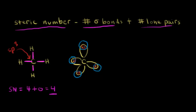Now that we have this picture of the methane molecule, we can think about these electron pairs. These electron pairs are going to repel each other — like charges repel. The idea of VSEPR theory tells us these electron pairs are going to repel and try to get as far away from each other as they possibly can in space. That means the arrangement of those electron pairs ends up being tetrahedral.